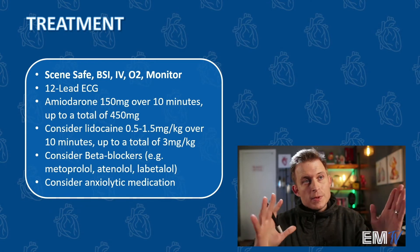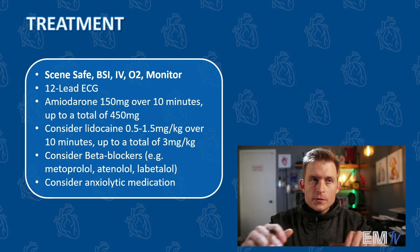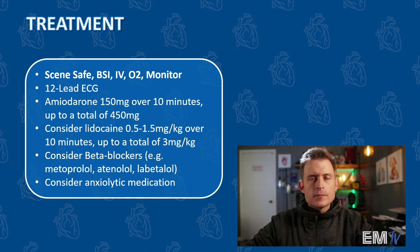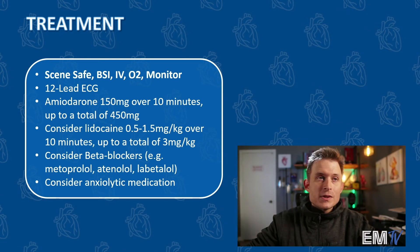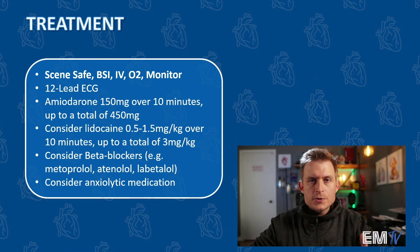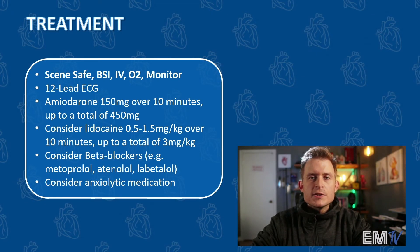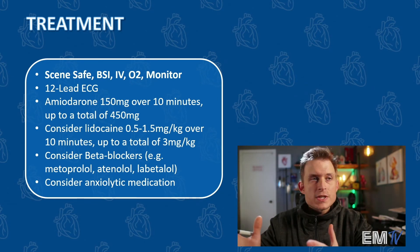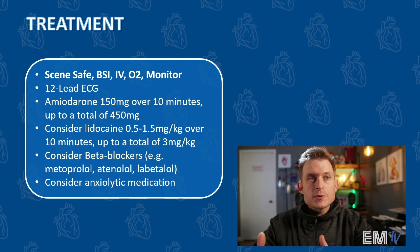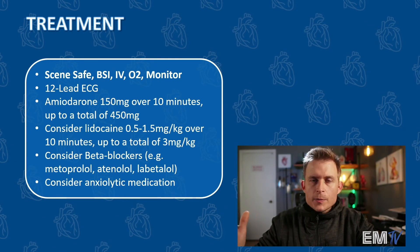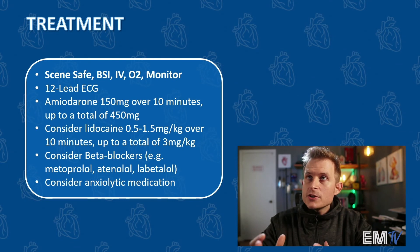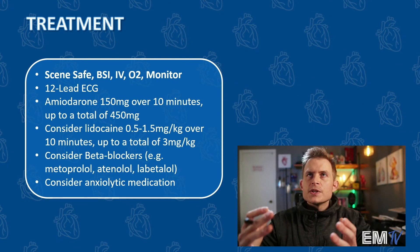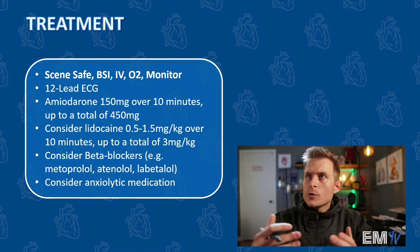If you want brownie points, that treatment — scene safe, BSI, IV/O2/monitor, 12-lead, and amiodarone — would have been perfect for a card and I would have checked you off at full points as an evaluator. But for extra credit, the next drug to consider as an anti-dysrhythmic would be lidocaine, with a dose range of 0.5 to 1.5mg per kg, given slowly sometimes over 10 minutes, repeatable up to a total dose of 3mg per kg. You could also consider a beta blocker such as metoprolol, labetalol, or atenolol. And because the patient mentioned they were anxious, you could consider an anxiolytic like lorazepam, diazepam, or midazolam.